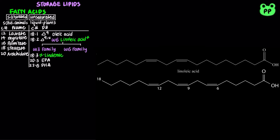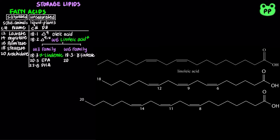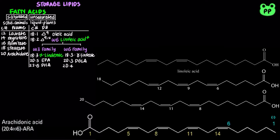Linoleic acid also gives rise to the 18-carbon omega-6 unsaturated fatty acid known as gamma-linolenic acid, the 20-carbon omega-6 unsaturated fatty acid DGLA or dihomo-gamma-linolenic acid, as well as the 20-carbon arachidonic acid that is present in many membrane lipids.